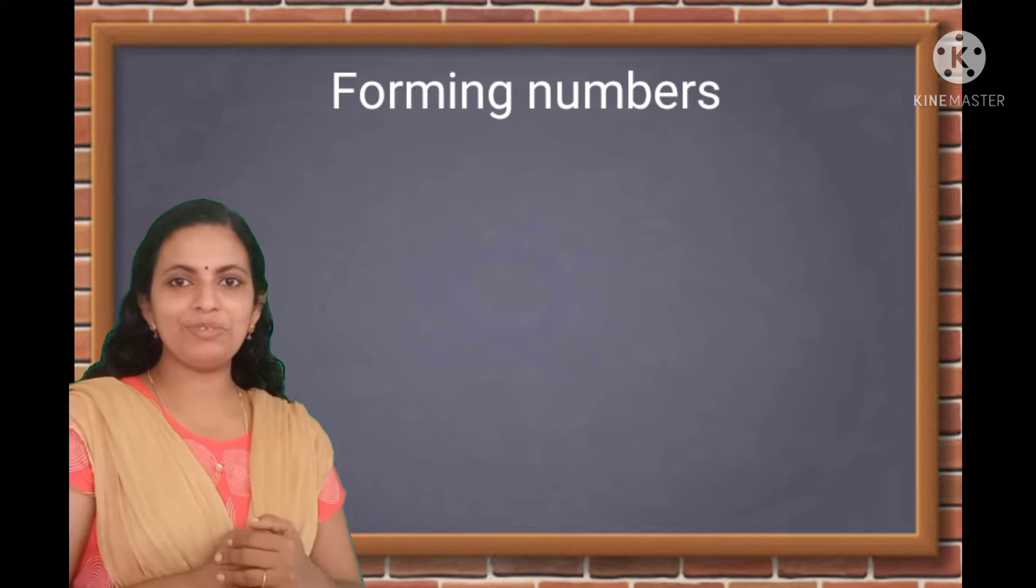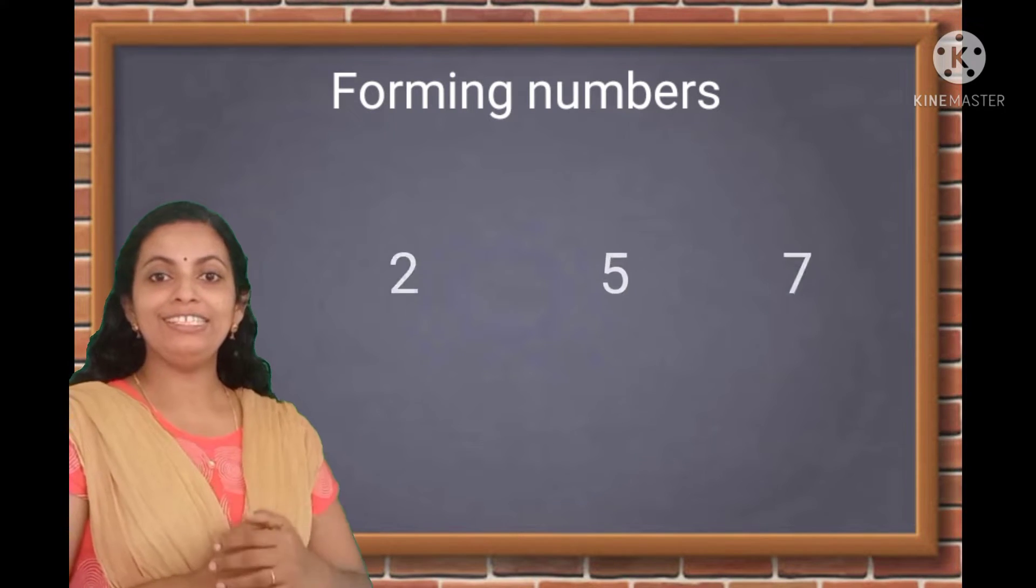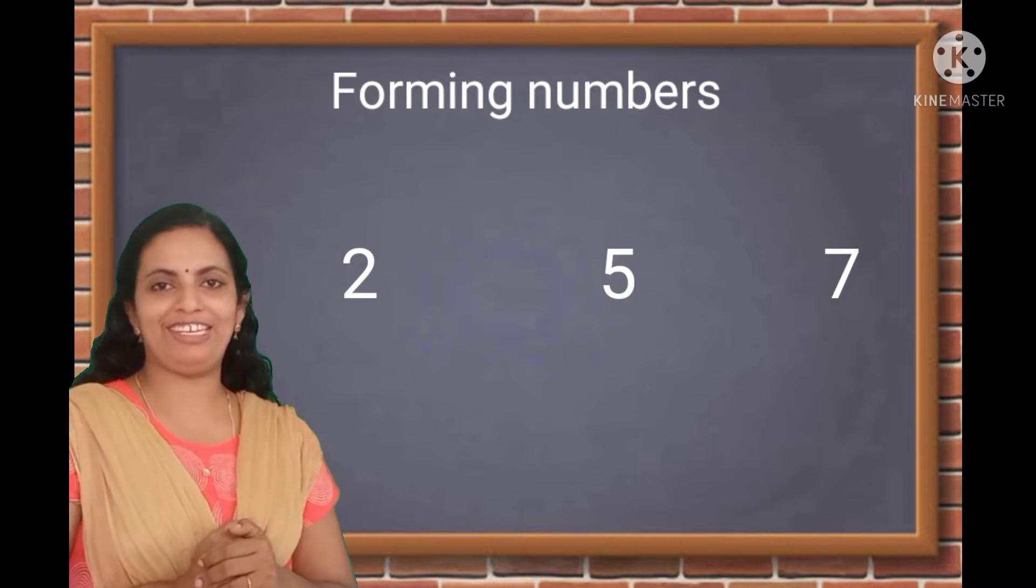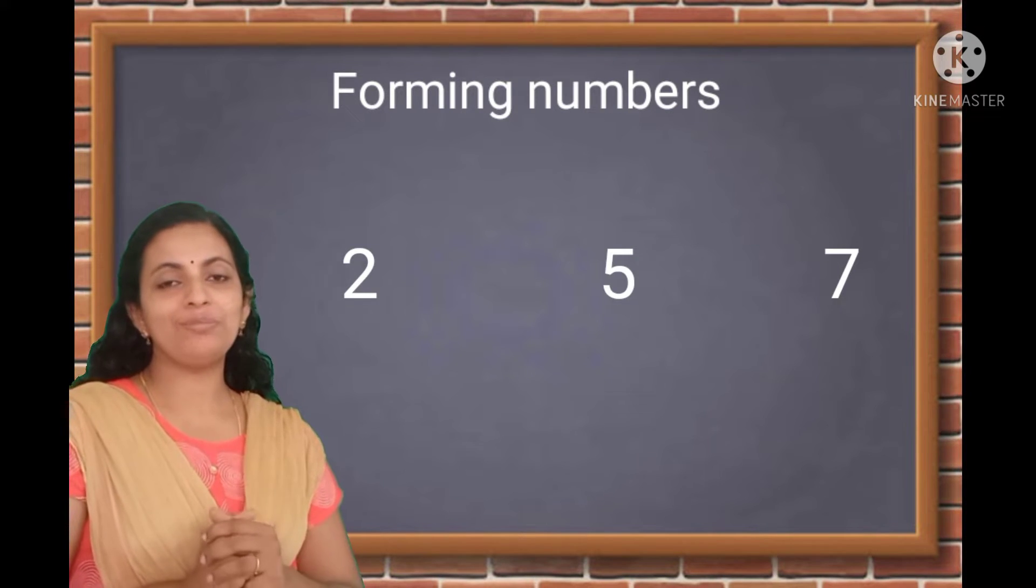We found three digit numbers. Here there are three different digits: 2, 5, 7. So, which are the numbers we can form?